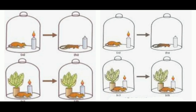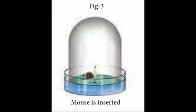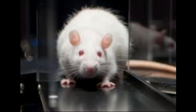Later, Lavoisier named the substance necessary for burning as oxygen, and during the process of burning, oxygen is converted mostly into carbon dioxide. Now as the jar was inside the water, Priestley could gently lift the jar and place a live mouse inside it without allowing outside air to enter the jar. Without oxygen, as you would have guessed, the mouse died.